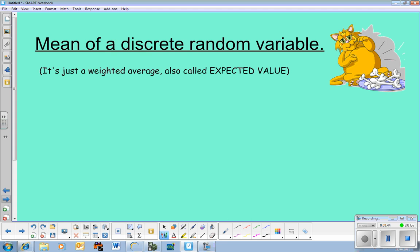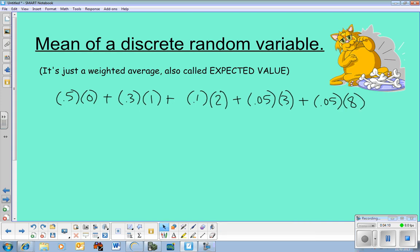All this is is an expected value or a weighted average. Okay, what we're finding out is the average number of cats that everyone has. Okay, well, if 50% of us have 0, and 30% of us have 1, and 10% of us have 2, and 5% of us have 3, and 5% of us have 8, then I add these values together and I'm going to get my weighted average. And that average is 1.05 cats.